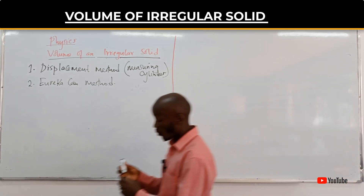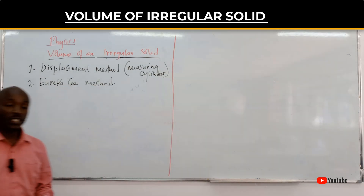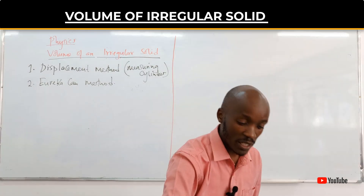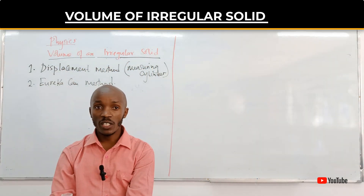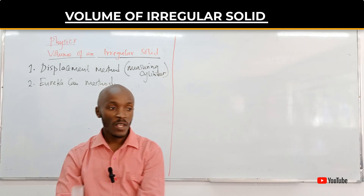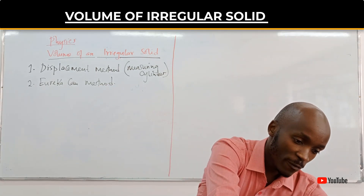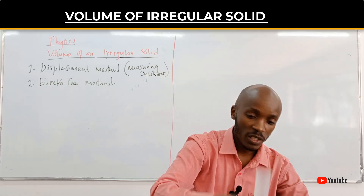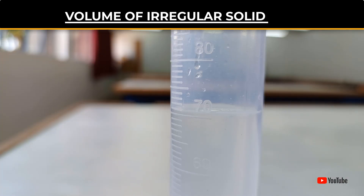The first method we had already discussed in class. You take a measuring cylinder, and you put a volume of water up to a specific level — let's say, for instance, up to 70 milliliters.